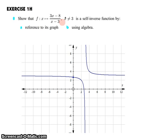In this question we have a function f(x) = (3x - 8)/(x - 3), where x is not allowed to be 3 because when x is 3 you have a zero in your denominator—that's division by zero. We're asked to show that it's a self-inverse function.